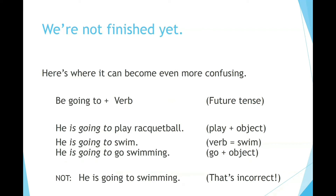We are not finished yet. Here is where it can become even more confusing: 'be going to' plus verb for the future tense. He is going to play racquetball — 'play' is the verb, 'racquetball' is the object. He is going to swim — 'swim' is the verb. He is going to go swimming — 'go' is the verb and 'swimming' is the object. Not 'he is going to swimming' — that's incorrect.